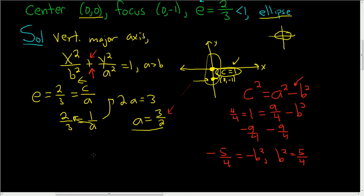And now we can go ahead and write the general formula down. So x squared over b squared, which is 5 fourths, plus y squared over a squared. Well, a squared is 9 fourths. And this is equal to 1.